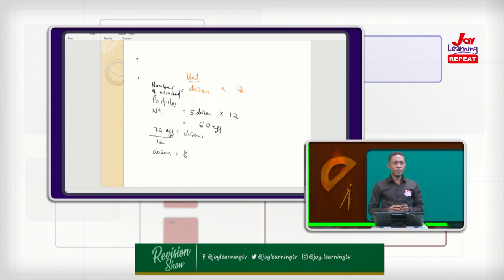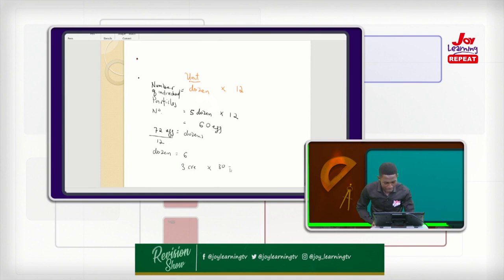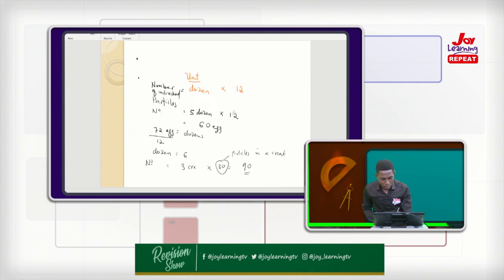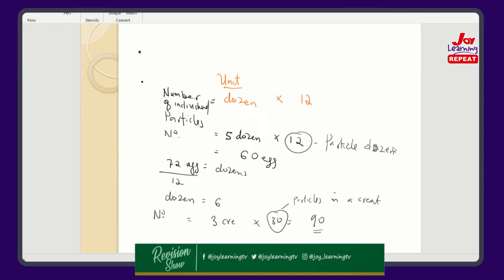A dozen is general — everything can be a dozen. But the poultry industry uses crates, and that is their language for 30. So if the boys say there are 3 crates, I'm going to multiply by 30 to get 90 individual eggs. The number of individual eggs is 3 crates times 30 equals 90. So you understand that any unit of measure has particles that make up that unit.